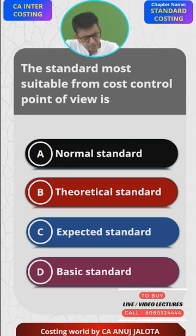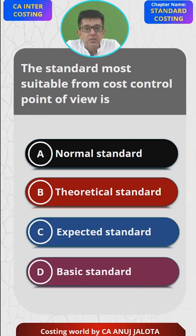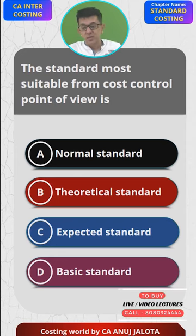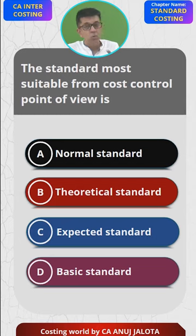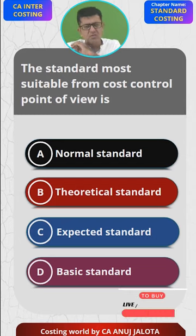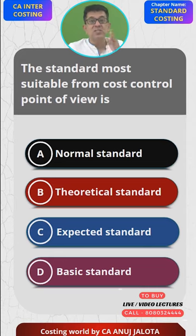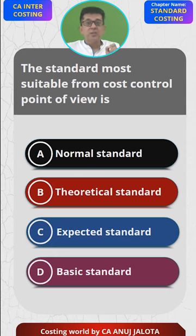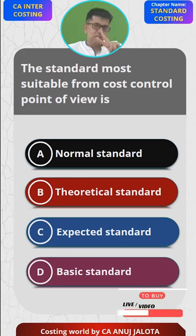Theoretical standard means what we can achieve assuming everything good happens — for example, there are no downtimes, no loss of time, no strikes, everything working perfectly fine. We can be producing say 20,000 units in a year. So that is theoretical standard.